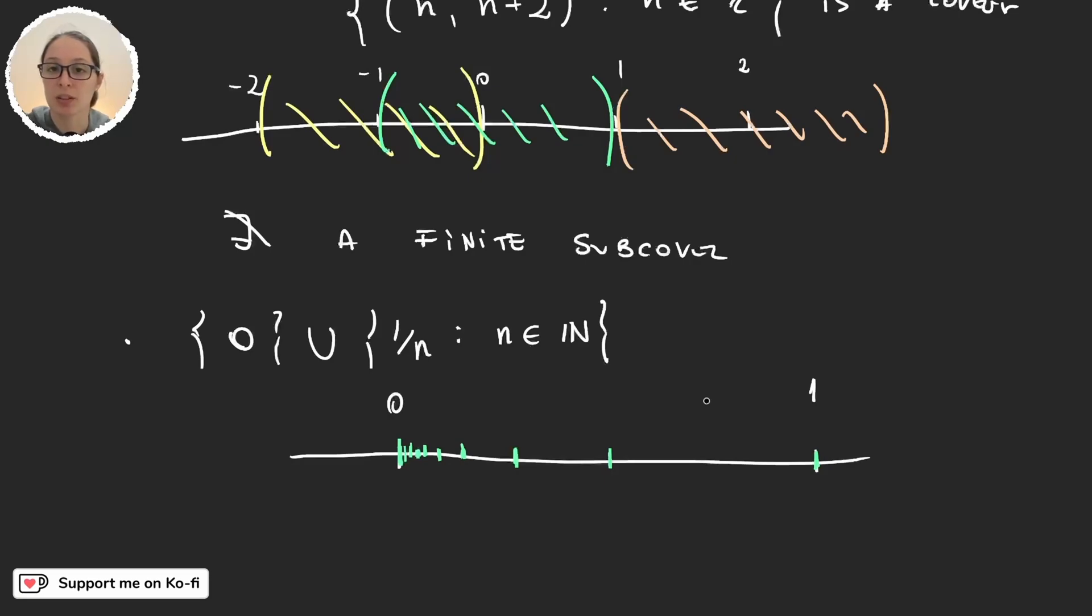And here we are considering the usual topology of the real numbers. So my open sets are intervals or unions or intersections of intervals. But without any loss of generalization, I can suppose that my covering is going to be of intervals, because if it wasn't, then I could always find intervals inside those open sets.